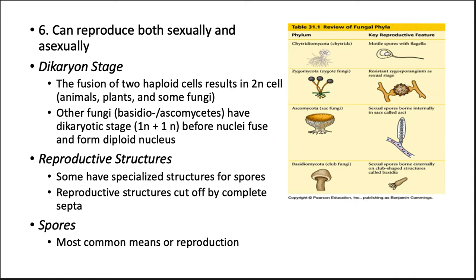Fungi can reproduce sexually and asexually. They usually use spores, which can be asexual or sexual. When a fungus reproduces sexually, two haploid hyphae of compatible mating types come together and fuse. Spores can be dispersed by wind, and when a spore lands in a suitable place, it germinates to give rise to a new fungal mycelium.